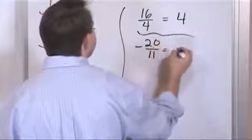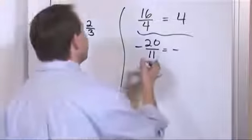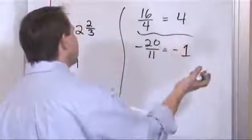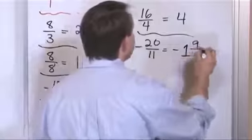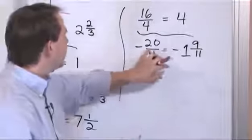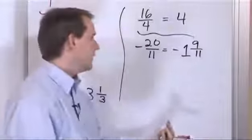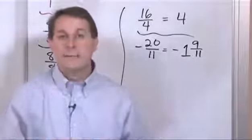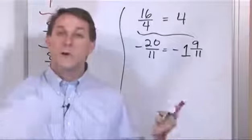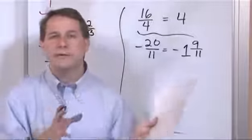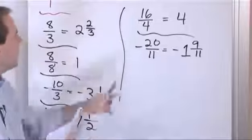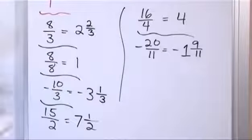Negative twenty over eleven: keep the negative sign along for the ride. How many times can eleven go into twenty? Eleven times one is eleven, eleven times two is twenty-two — too many. So it can only go one time. Twenty minus eleven gives a remainder of nine, written out of eleven. So the answer is negative one and nine elevenths. Sometimes you get a whole number because the division is exact with no remainder left over.